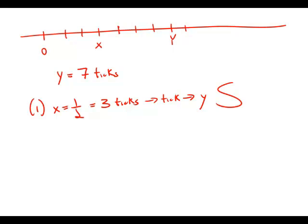Now forget about statement number one. Focus only on statement number two. Statement number two tells us that y minus x is two-thirds. So this distance right here, the distance between y and x, is two-thirds.